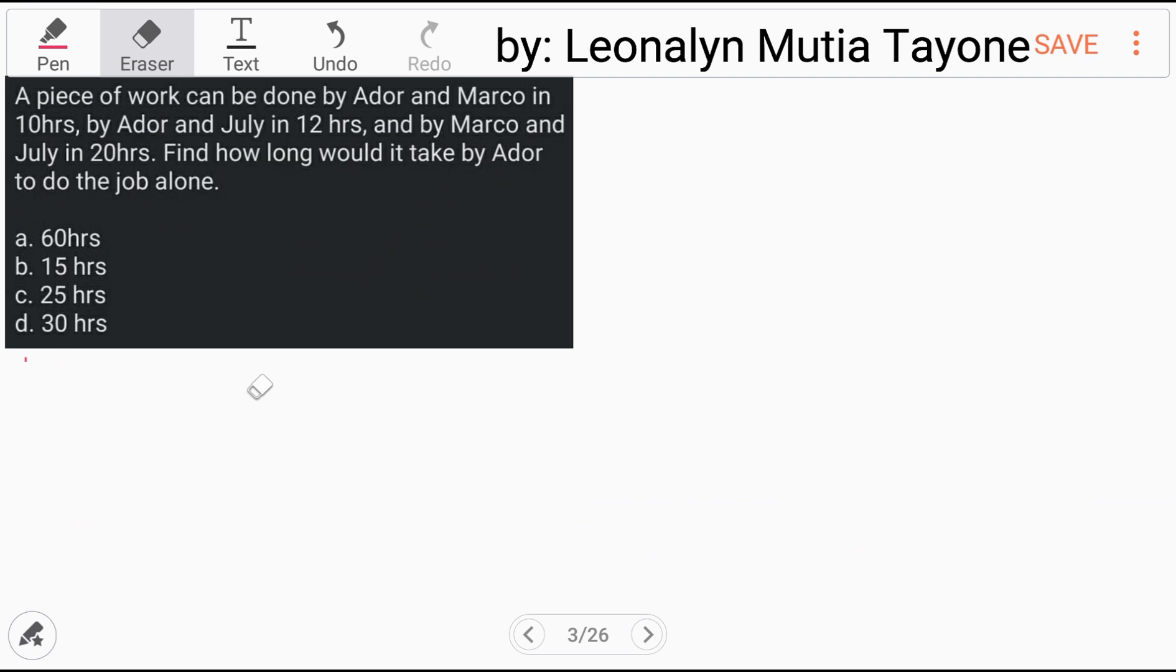Now, let's go to our work problem. A piece of work can be done by Adore and Marco in 10 hours, by Adore and Julai in 12 hours, and by Marco and Julai in 20 hours. So, we have three people: Marco, Adore, and Julai. Let M be the number of hours for Marco to work alone, A for Adore, and J for Julai.